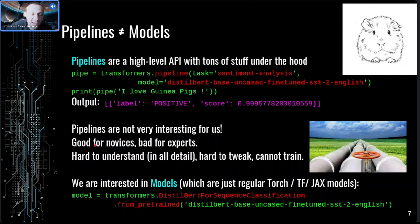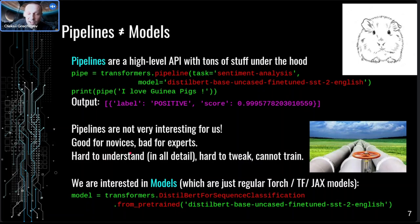Pipelines are what people usually start with when they begin learning the Transformers framework, but they are not very interesting for experts. In particular, pipelines are hard to truly understand - there is a lot of hidden logic. They are hard to tweak, you cannot train them, and you cannot use them for anything the authors didn't think of in advance - like new or complicated tasks. We are interested in models, which in Transformers framework terminology are just regular PyTorch models with some conventions imposed by the framework.